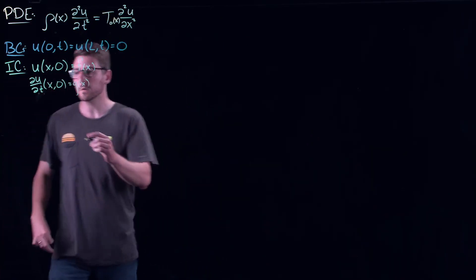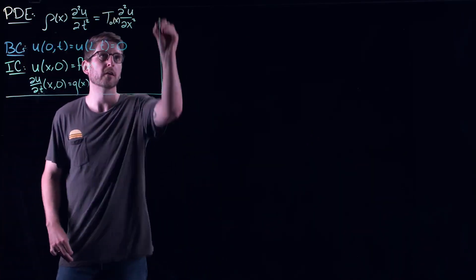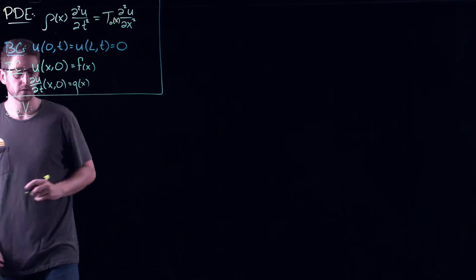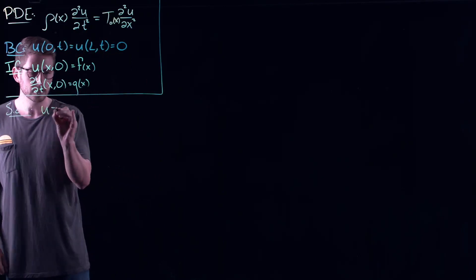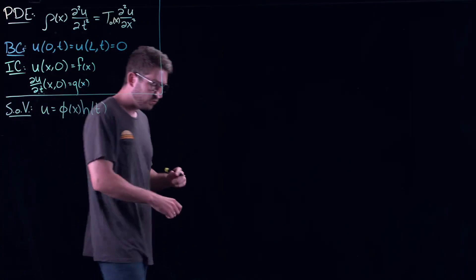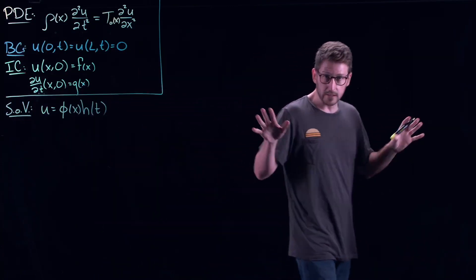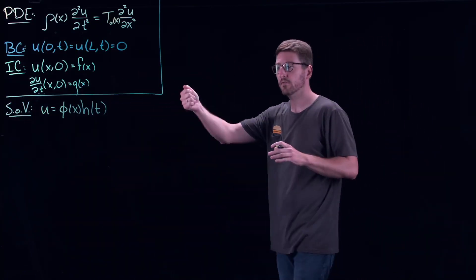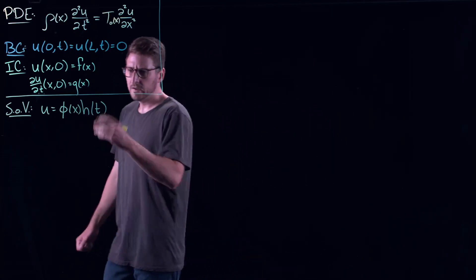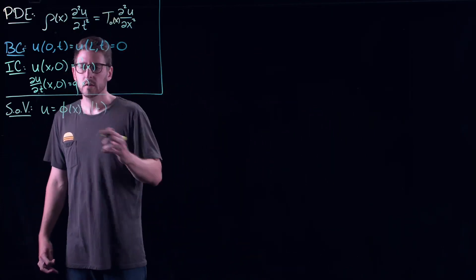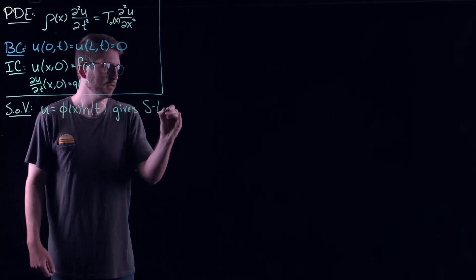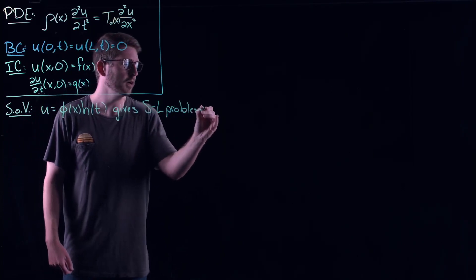What we can do is apply separation of variables. I set u equal to φ(x) times h(t), separating the independent variables. This gives a Sturm-Liouville problem — remember, everything comes down to the Sturm-Liouville part, so I'm really just going to focus on that.